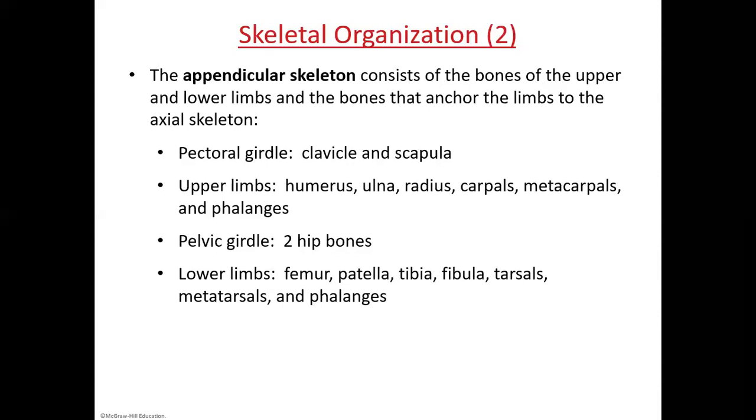The upper limb bones are your humerus, the ulna, radius, carpals, metacarpals, and phalanges.